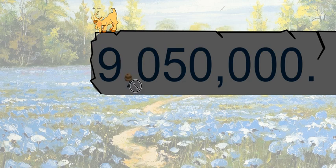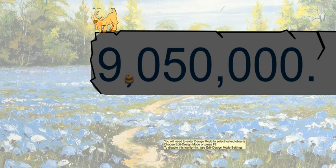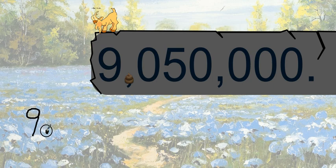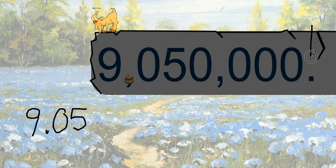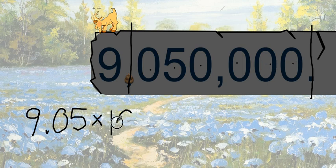Whoa, do you see what happened? Now we've got nine point zero five. That's crazy, Billy! How far did that move from the original decimal point? It looks like one, two, three, four, five, six — that's 9.05 times ten to the sixth power. Oh, that's what I call scientific notation!